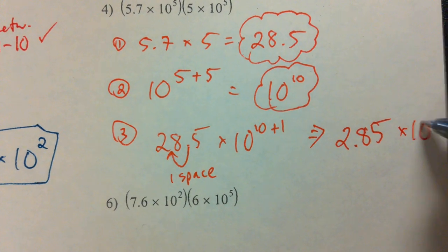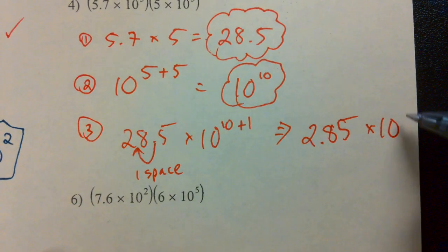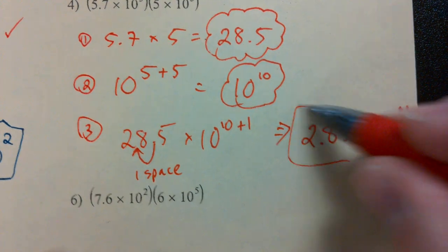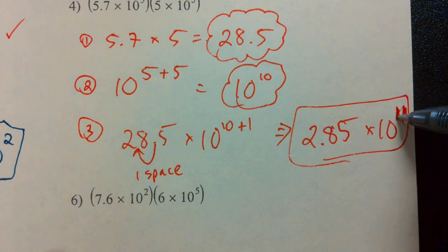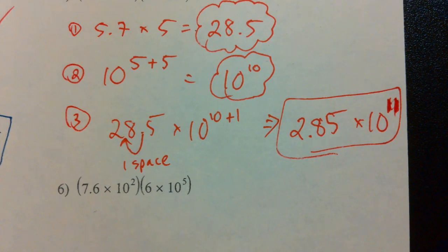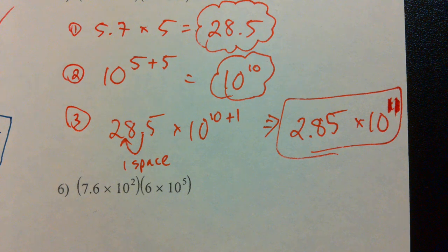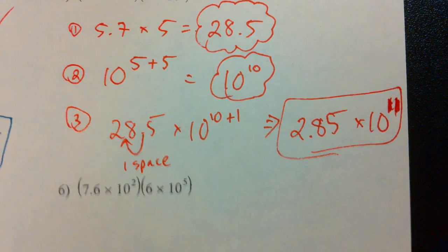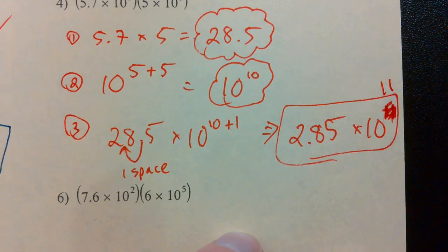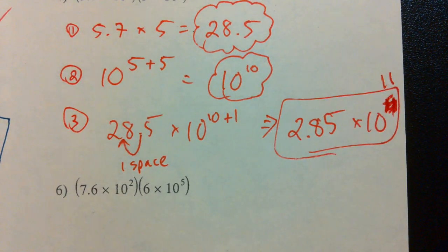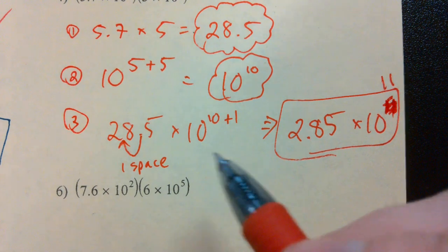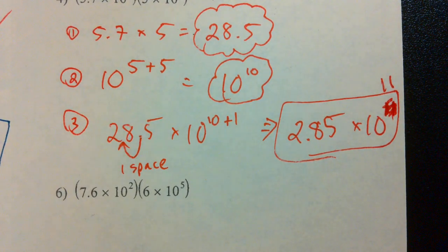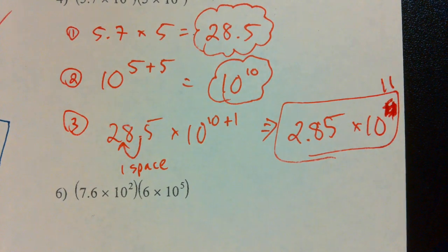So, my new leading number is 2.85. Is that in between 1 and 10? Yes, it is. What's my new power of 10? 11. 10 to the 11th. I know, it looks like a 4. That's my bad. 10 to the 11th power. Does that look like an 11 now? It looks like... There you go. Whatever. You get it. 10 to the 11th power. You know 10 plus 1 is 11.